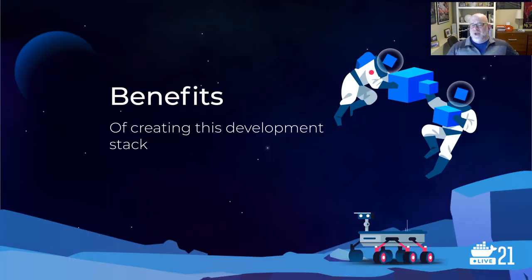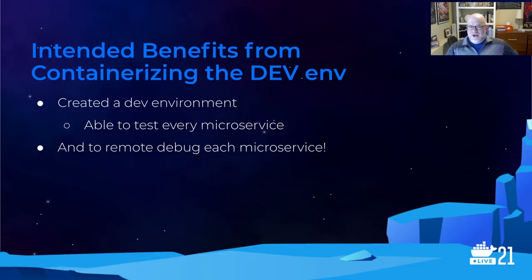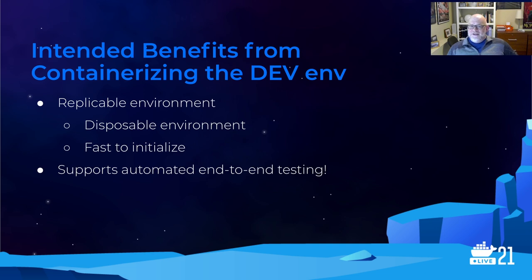There were several benefits we got out of creating this stack of containers. Most importantly, we satisfied the intended benefit — we created a development environment allowing us to test each and every microservice in the stack. To our surprise, it also gave us the capability to remote debug each microservice — that was delightful to discover. Additionally, we ended up with a highly replicable environment: each team member has access to run this stack on a different development server. It's completely disposable — we can destroy all containers and recreate them quickly. So it's fast to initialize, easily replicable, and it supported our end-to-end testing.